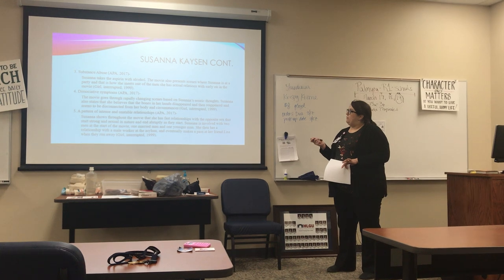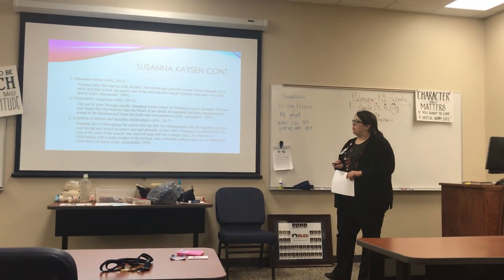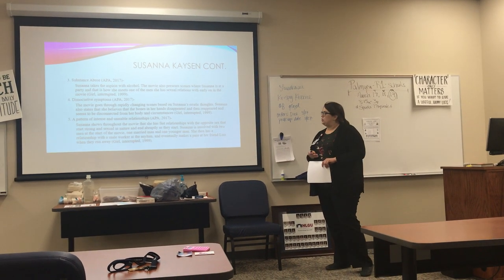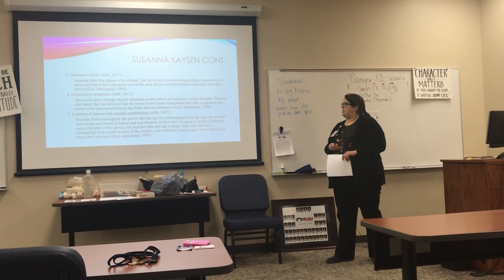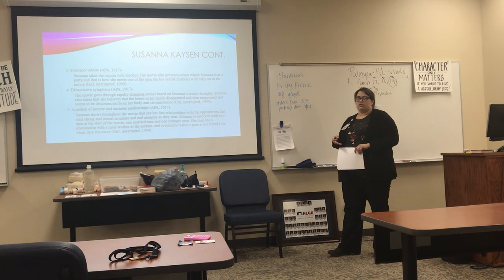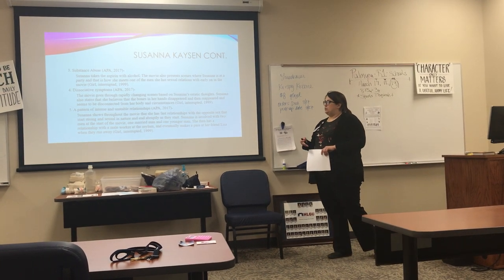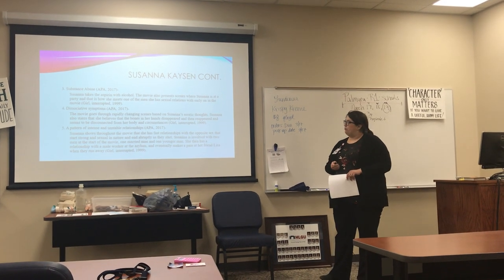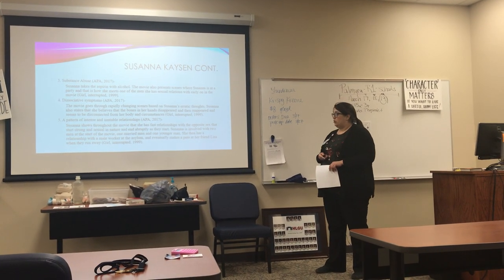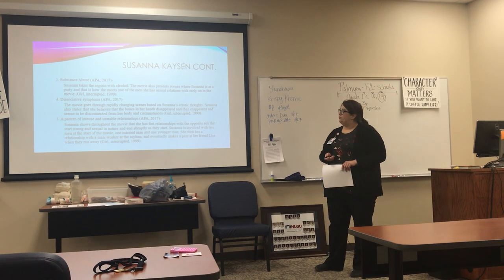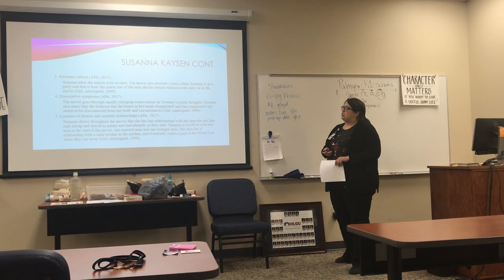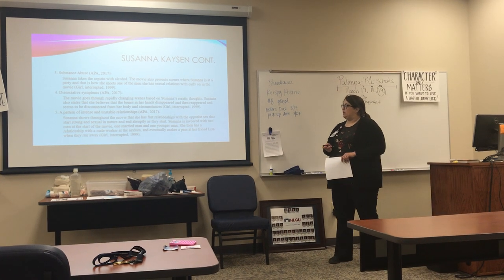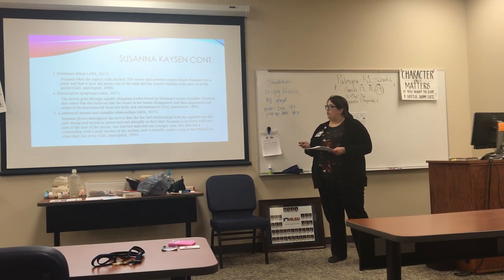A pattern of intense and unstable relationships is also evident. Susanna shows throughout the movie that she has fast relationships with the opposite sex that start strong and sexual in nature, but end as abruptly as they start. She is involved with two men at the start of the movie — one married man and one younger man — then has a relationship with a male worker at the asylum and eventually makes a pass at her friend Lisa when they run away.